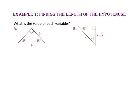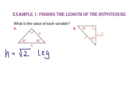In example 1, we will find the length of the hypotenuse. What is the value of each variable? We know that the hypotenuse is the square root of 2 times the length of the leg in a 45-45-90 triangle. Since the leg is 9 units long, we substitute 9 in for the length of the leg, so h equals 9 times the square root of 2.